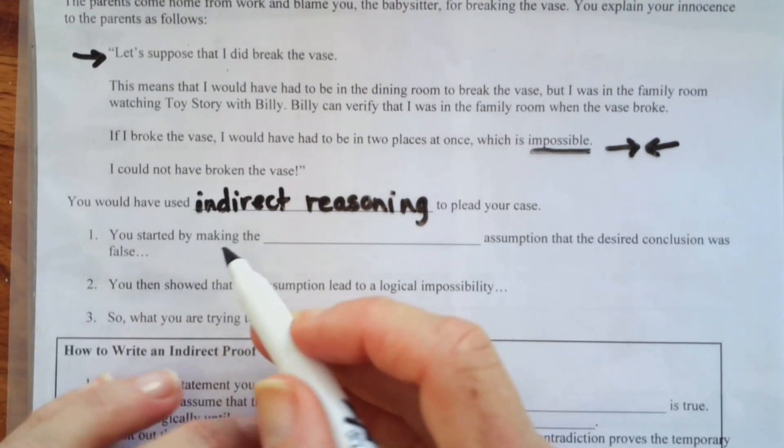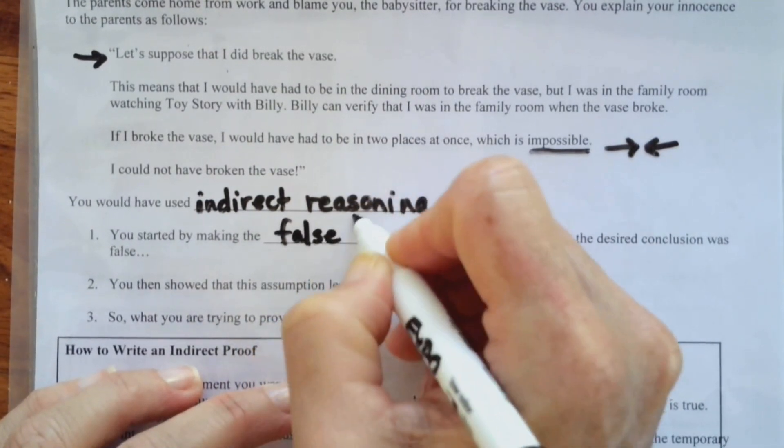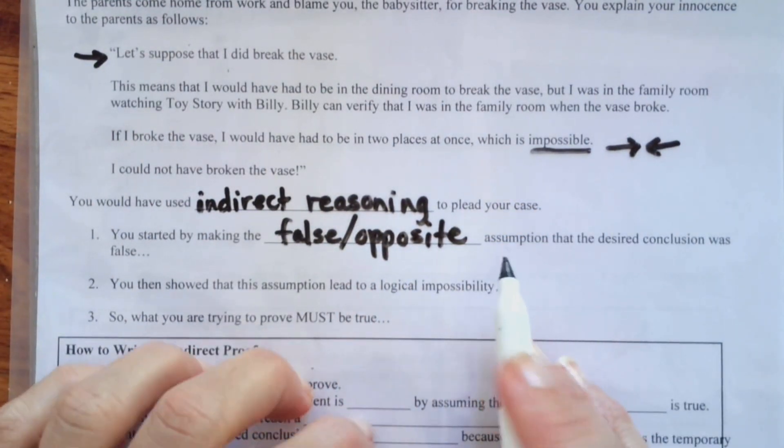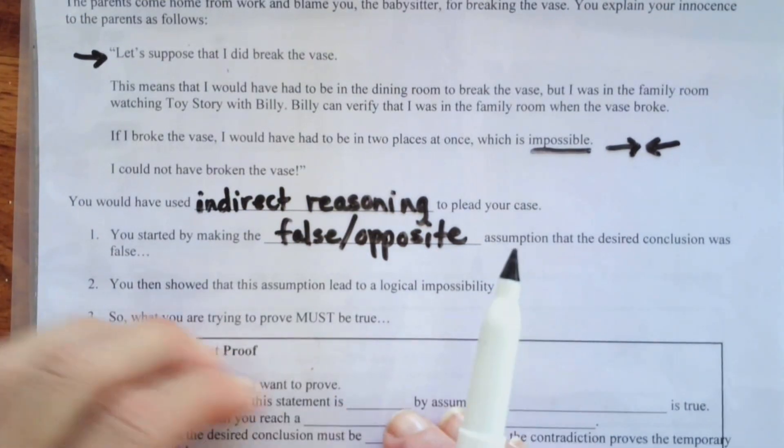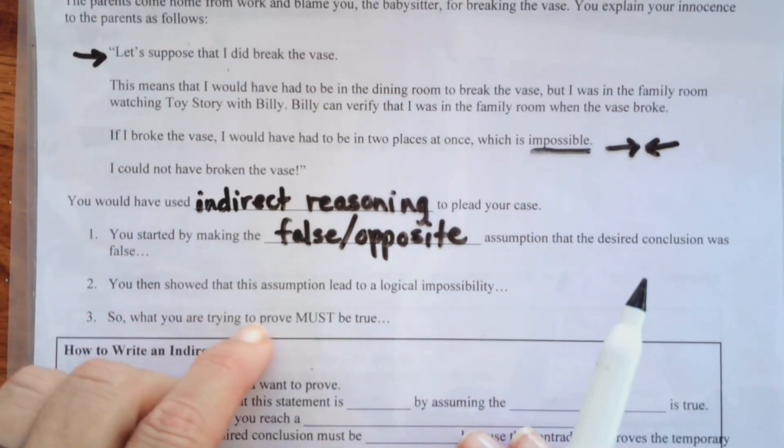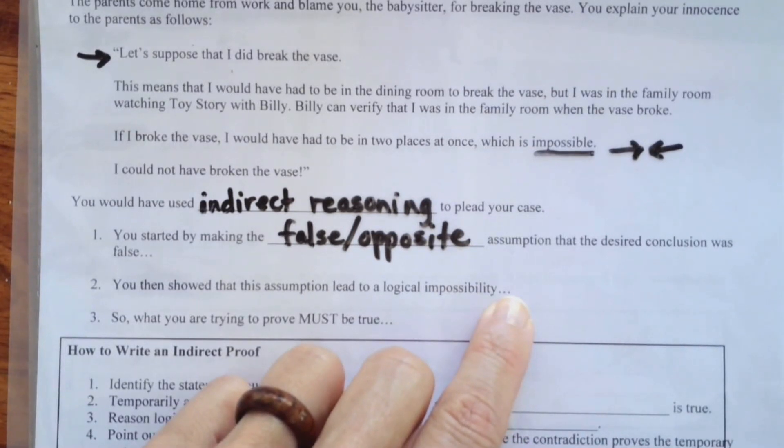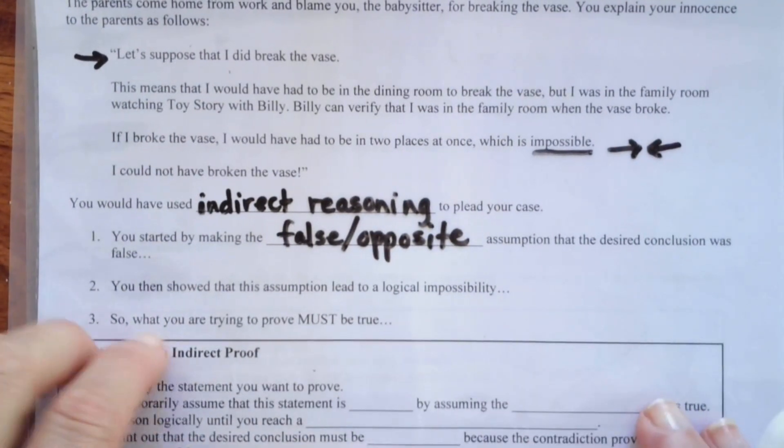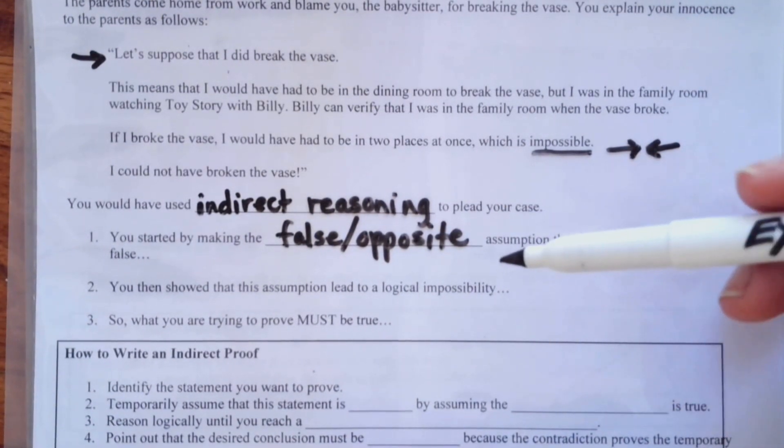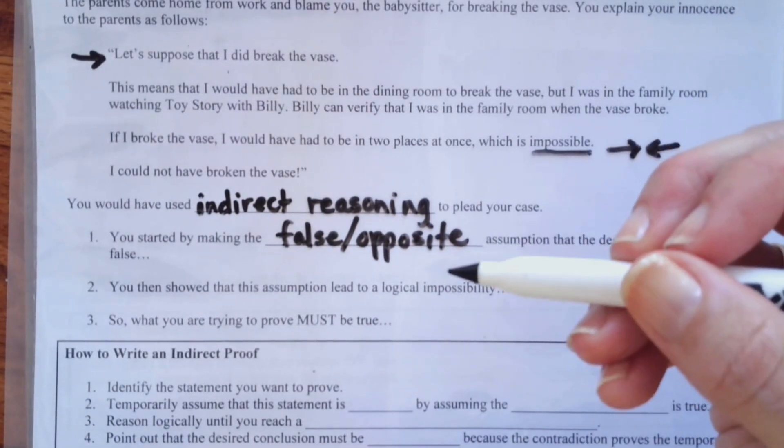So, what you do is you start by making the false or opposite assumption that the desired conclusion was false. You then showed that this assumption led to a logical impossibility. And then, if what you supposed was false is proven to be impossible, then what's left is truth. It has to be true if what you've chosen as false becomes impossible.